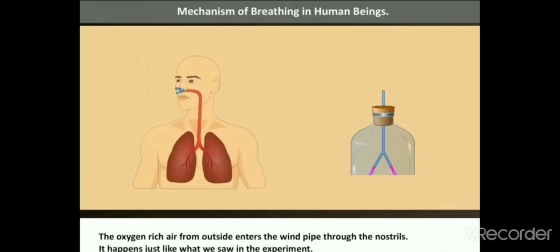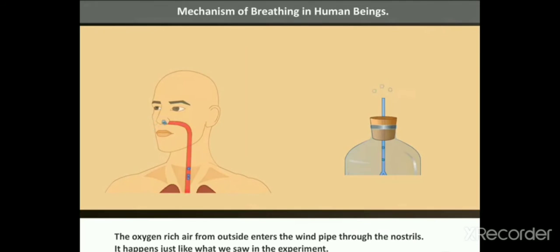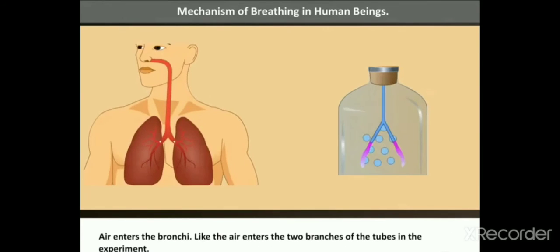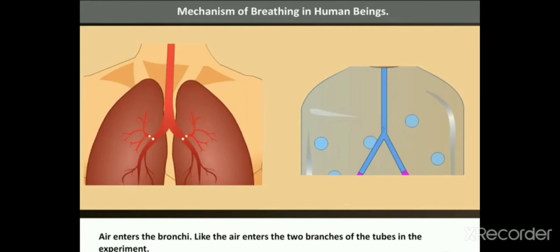The oxygen-rich air from outside enters the windpipe through the nostrils. It happens just like what we saw in the experiment. Air enters the bronchi like the air enters the two branches of the tubes in the experiment.